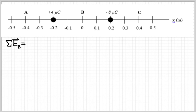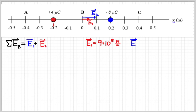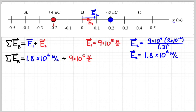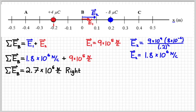Now let's do the same thing at point B. At point B, the electric field due to charge 1 is to the right, and the electric field due to charge 2 is to the right as well. So we find the individual electric fields and add them together. Finding E1 gives the same result since it's the same charge and same distance. E2, with the new distance of 0.2 meters, gives 1.8 times 10 to the 6th newtons per coulomb. Adding them gives a net electric field at point B of 2.7 times 10 to the 6th newtons per coulomb, directed to the right.